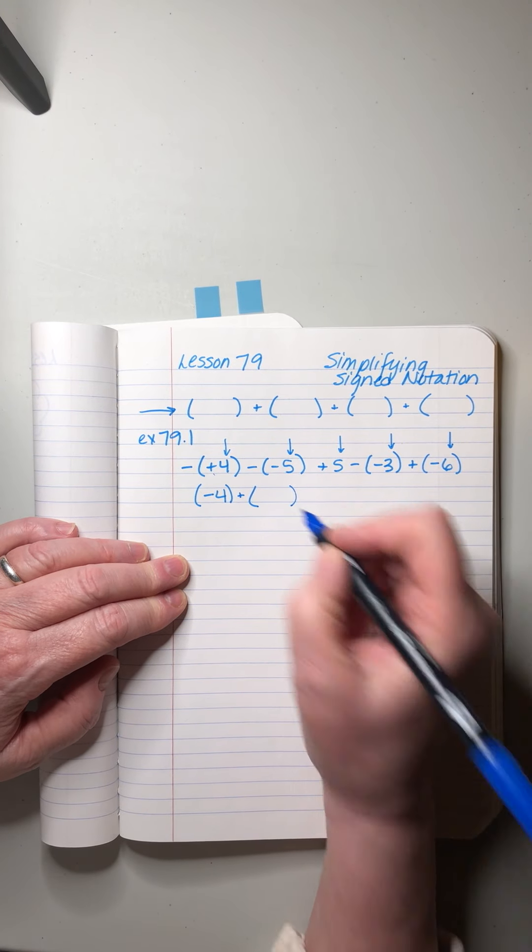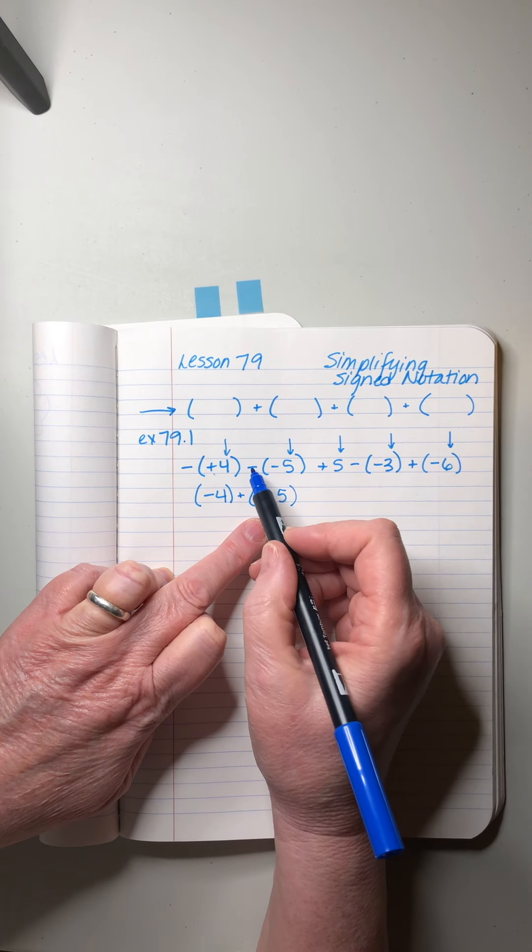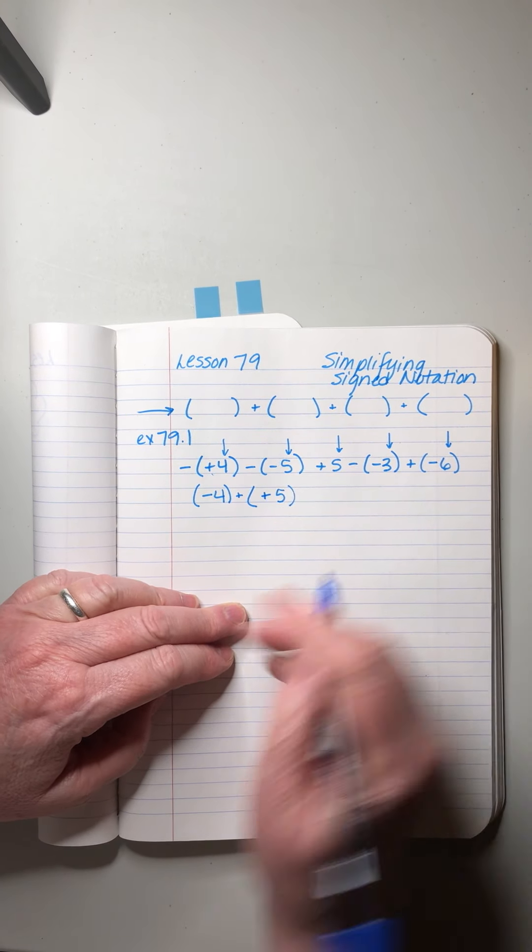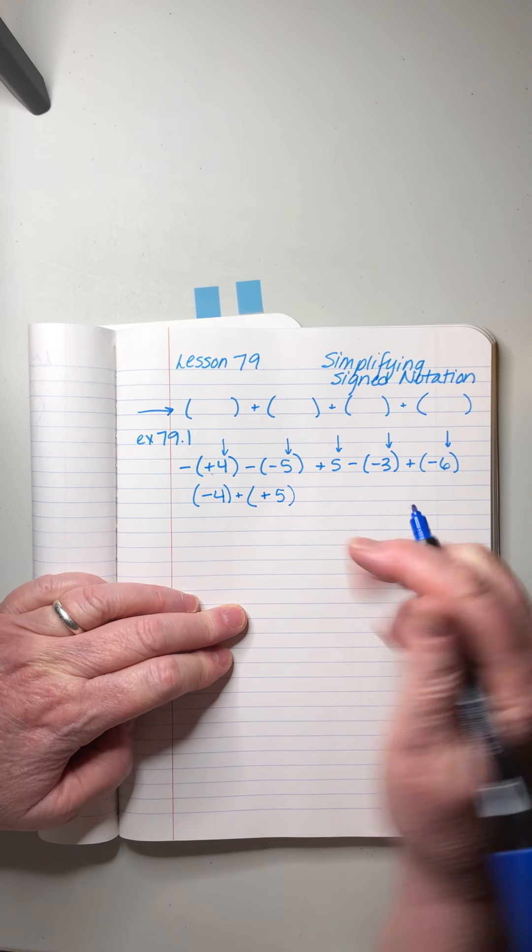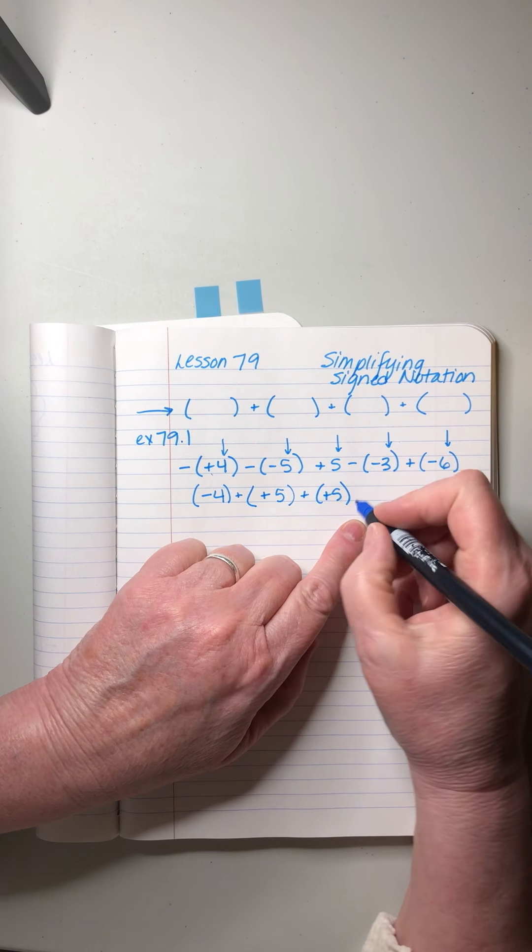This number is five. Now I've got two minus signs. Every two minuses make a plus, so that changes into a plus. That's all ready neat and tidy. What about this three?